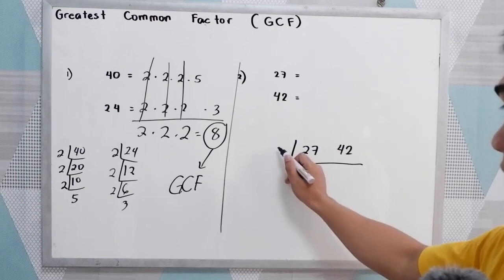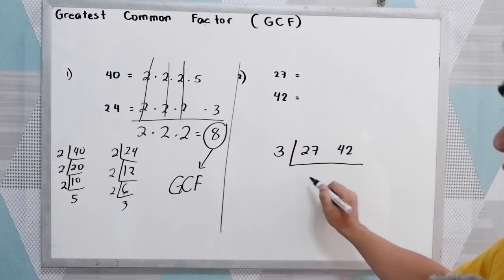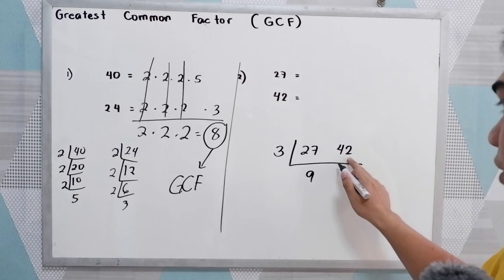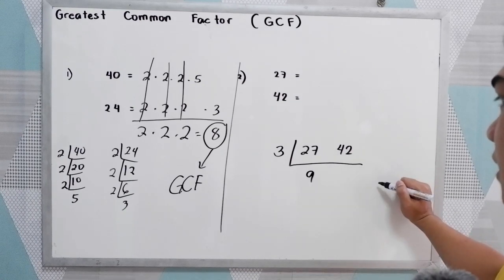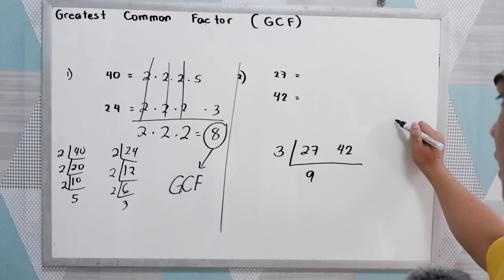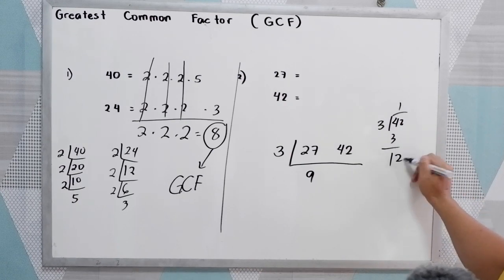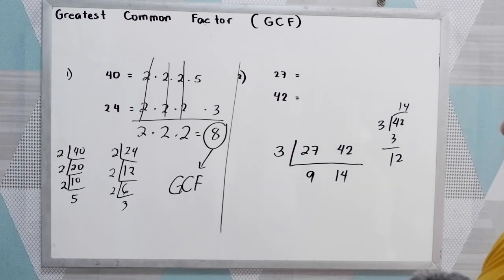Using the decomposition method to find the common factor of 27 and 42, we have 3. 27 divided by 3 is 9. 42 divided by 3 is 14.